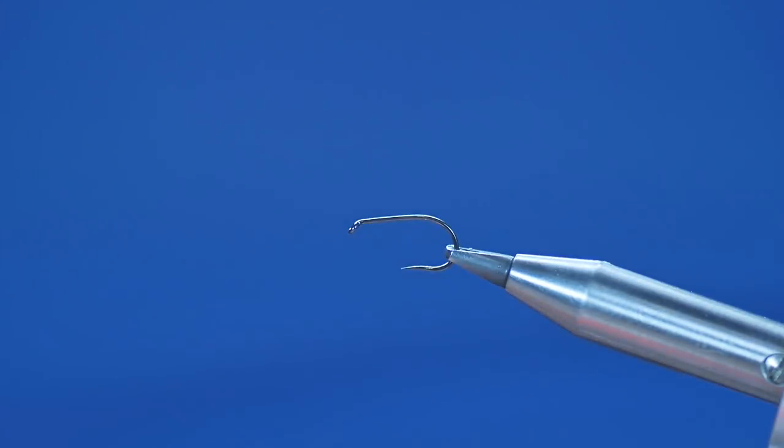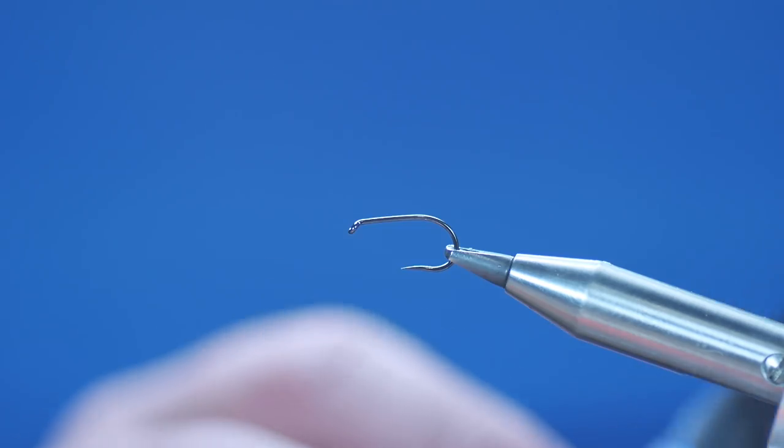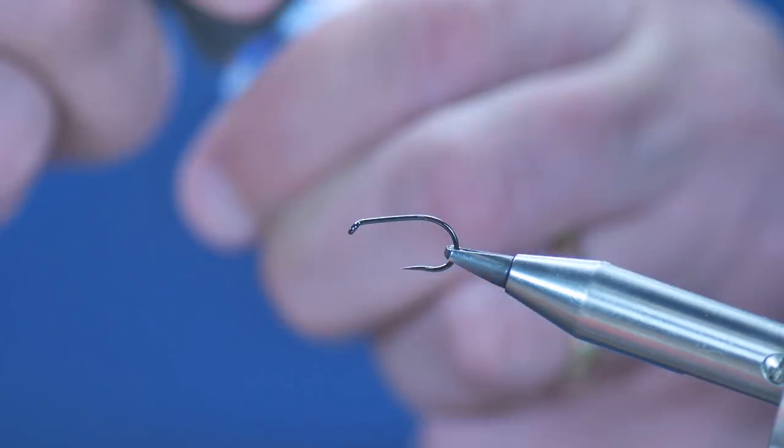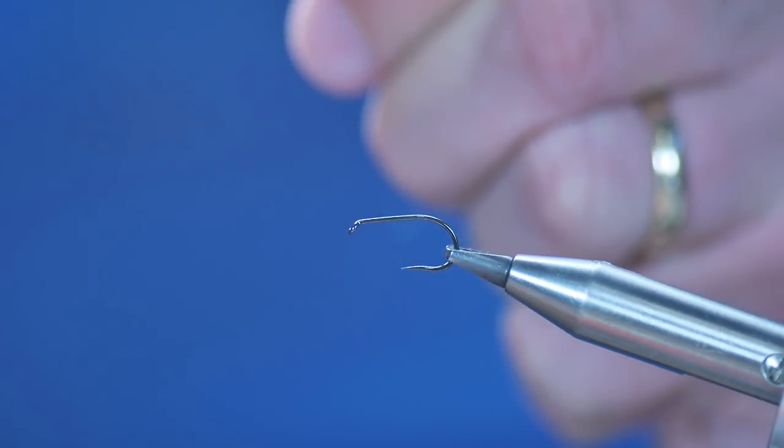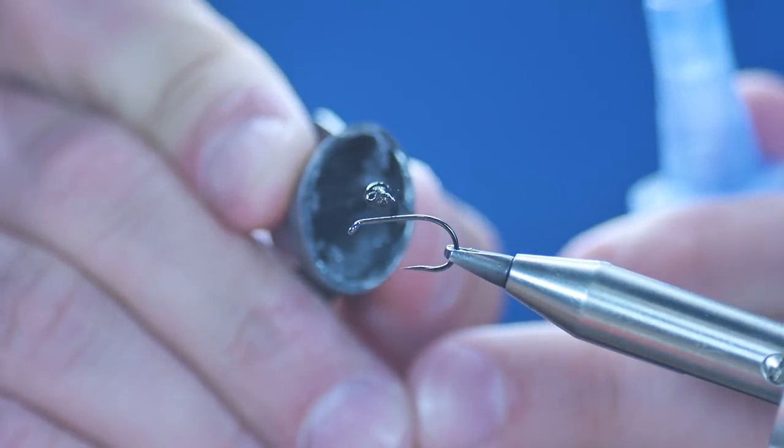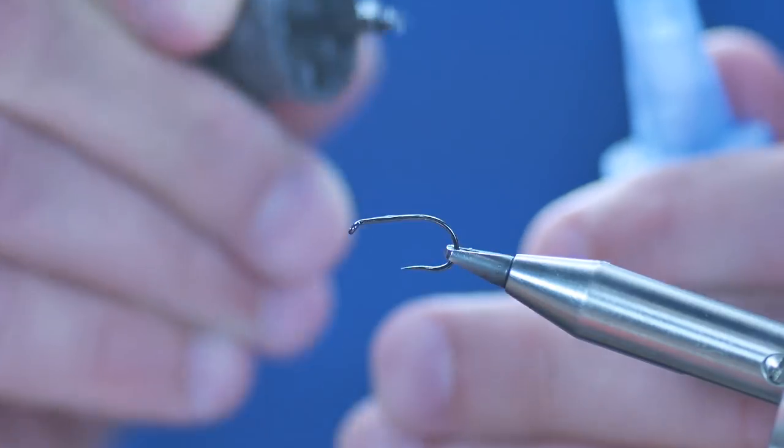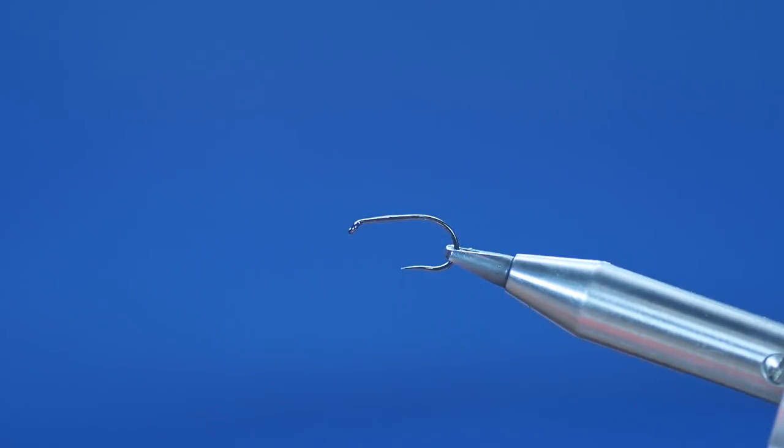In the vise is a Hanak 270 barbless hook at size 10, which is probably the same as a Kamasan size 12 in old money. First thing I'm going to do is put a little bit of super glue on the shank of my hook. The Vivas, although it's very good, it is quite slippy and I don't want this moving about on me.